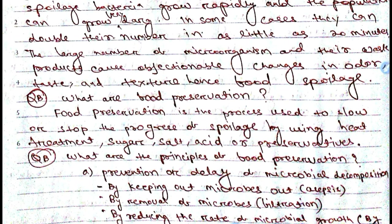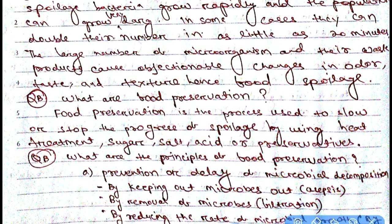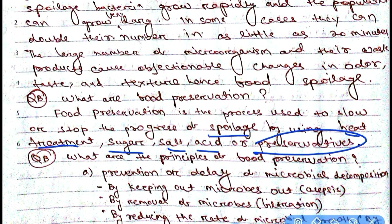Food preservation is the process used to slow or stop the progress of spoilage by using heat treatment, sugar, salt, acid, or chemical preservatives. The important goal is to stop or slow down food spoilage by using heat, sugar, salt, acids, and chemical preservatives that are allowed by FSSAI.